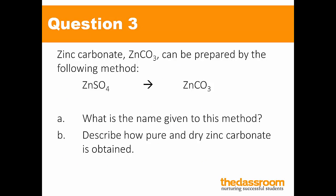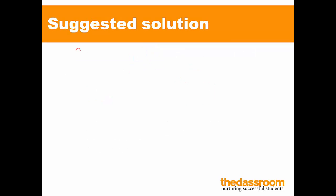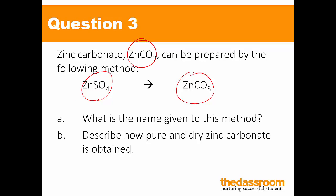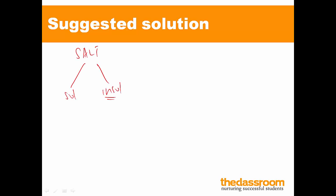Let's move on to question number three: you want to prepare zinc carbonate. Zinc carbonate is prepared from zinc sulfate to obtain zinc-2-carbonate. What's the name given to this method? Same thing — we start with the flowchart. You have a salt; you need to check if it's soluble or insoluble. Recall that most carbonates are insoluble except SPAR. So zinc carbonate is insoluble, and therefore we will use the precipitation method.